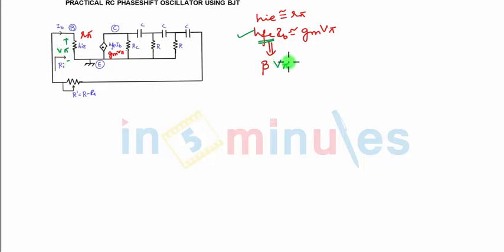And i_b over here we can write as the voltage across this, which is nothing but, if it is r_pi, you can write v_pi. Voltage-current, we are writing i equals v by r, and resistance is r_pi.